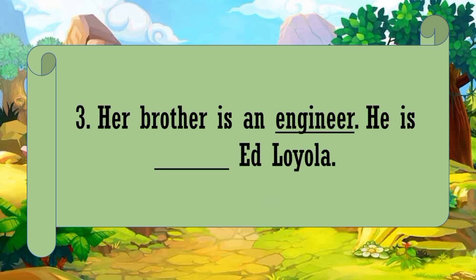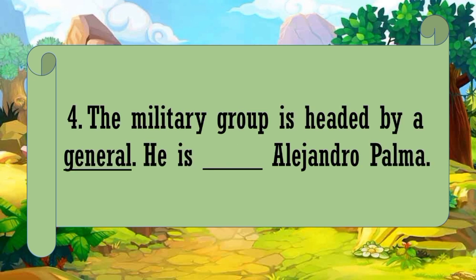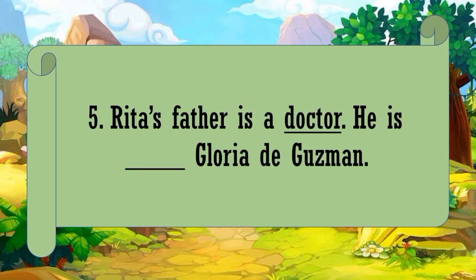Number 3: her brother is an engineer. He is Engr. Ed Loyola. The correct answer is engineer. Number 4: the military group is headed by a general. He is Gen. Alejandro Palma. The correct answer is General Alejandro Palma. And number 5: Rita's father is a doctor. He is Dr. Gloria de Guzman. The answer is Dr. Gloria de Guzman.